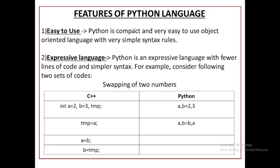Features of Python language. First: easy to use. Python is a very easy to use language. Its commands are very easy to write. Python is a compact and very easy to use object-oriented language. Object-oriented languages are those which work on objects.